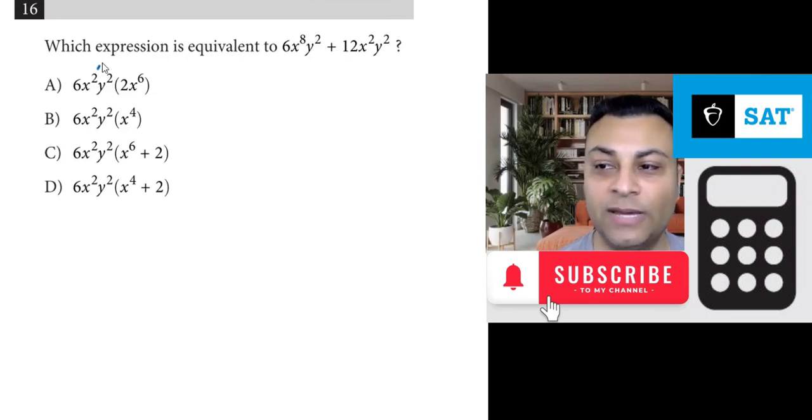If you were to expand this, you get a monomial. A monomial times a monomial will give you a monomial. And here's what I mean. If you expand this out, you get 6 times 2, 12.